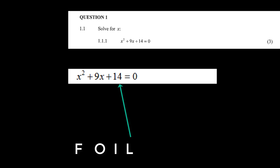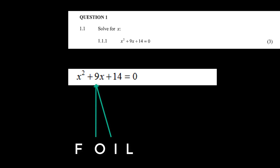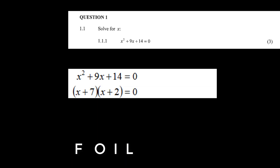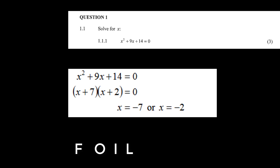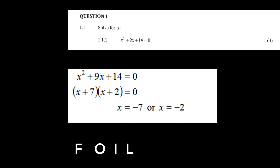Because 14 is positive, either both factors are negative or both factors are positive. The inside and outside terms must add up to plus 9, which is plus 7 plus 2. Therefore the factors are (x + 2)(x + 7), giving x equals minus 7 and x equals minus 2.